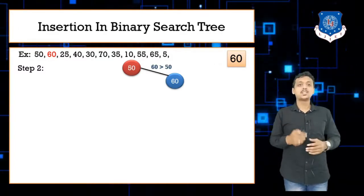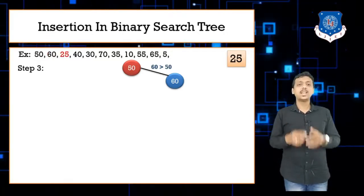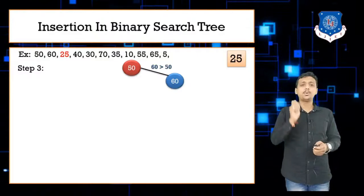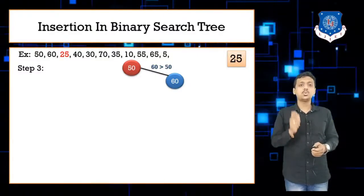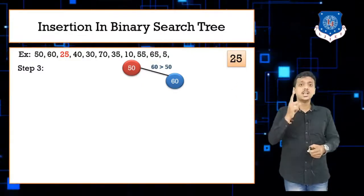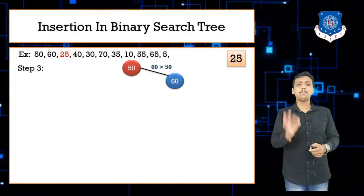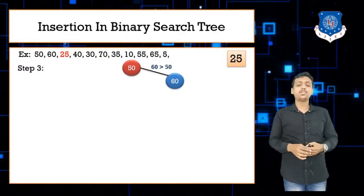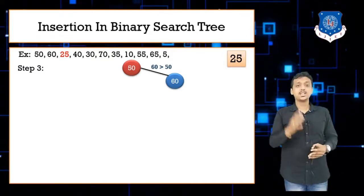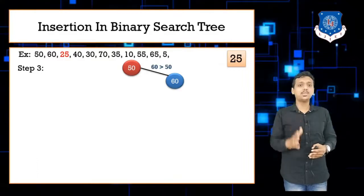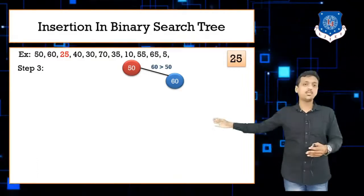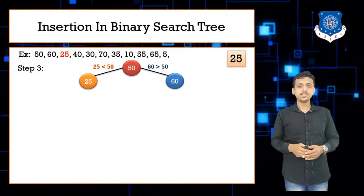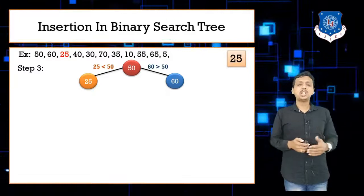Step 3: the next value is 25. For any operation on a binary search tree, always start comparison from the root node. The root node is 50, so compare 25 with 50 — 25 is less than 50, so insert 25 on the left side of 50.